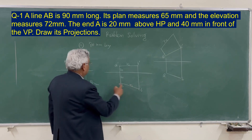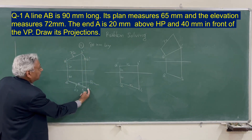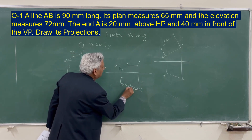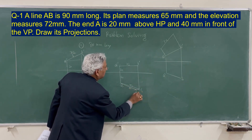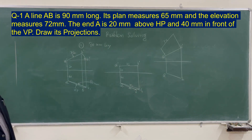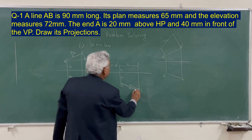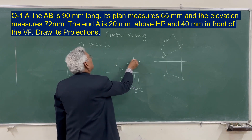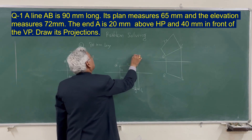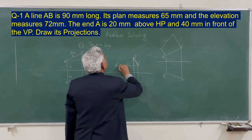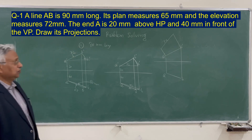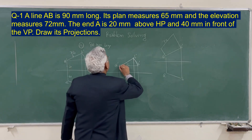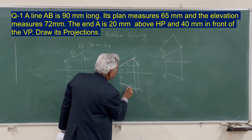What we have done: we have rotated this elevation and made it parallel to the ground. So it measures 72 mm here. Corresponding to that, you get B at a distance of true length from A. But the line is not parallel to the horizontal plane, so this is not the plan length — plan length is 65. So from point B one, move parallel to the ground line and mark 65 mm. This gives you point B. From B, draw a projector, and rotating B dash back, you get point B dash. A dash to B dash is the elevation, and A to B is the plan.